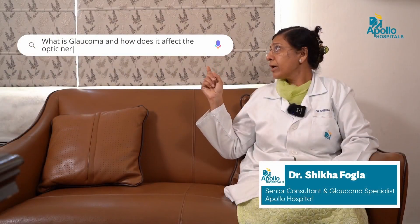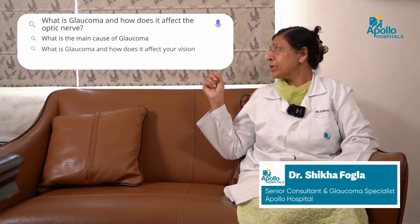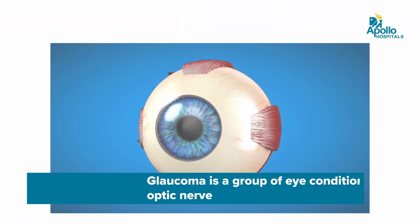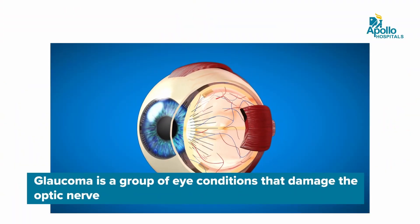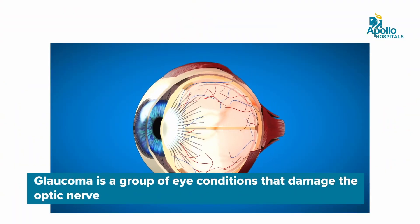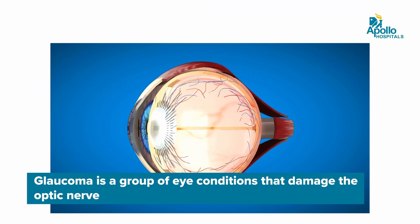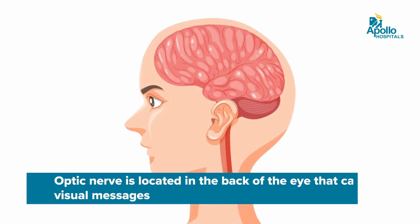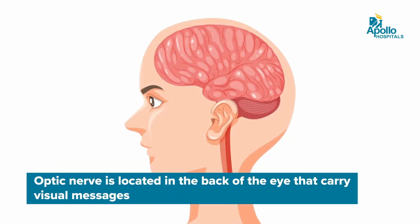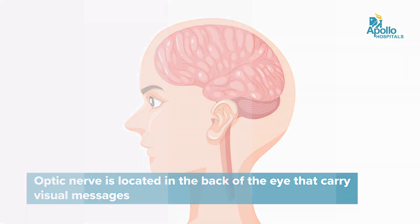What is glaucoma and how does it affect the optic nerve? Glaucoma is a condition that causes progressive damage to the nerve of the eye, which is the optic nerve. The nerve relays images to the brain which helps us see things.